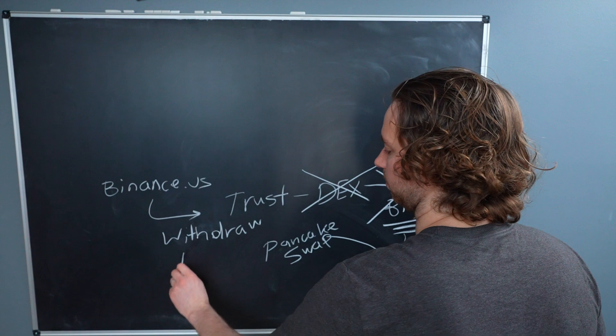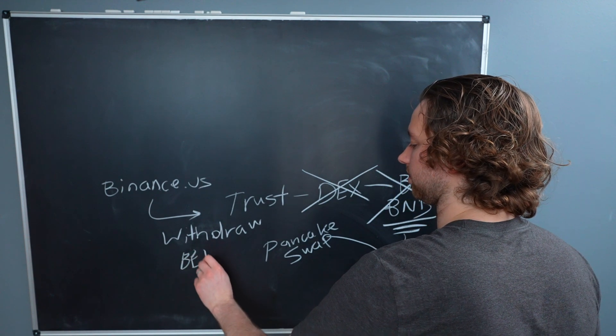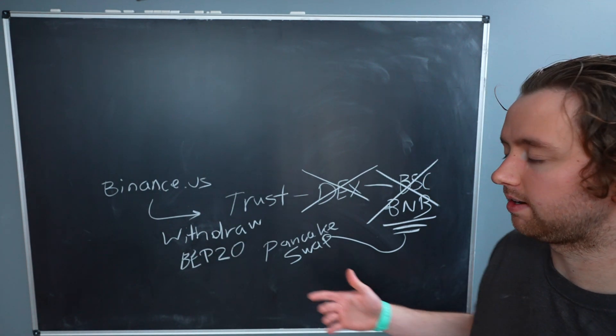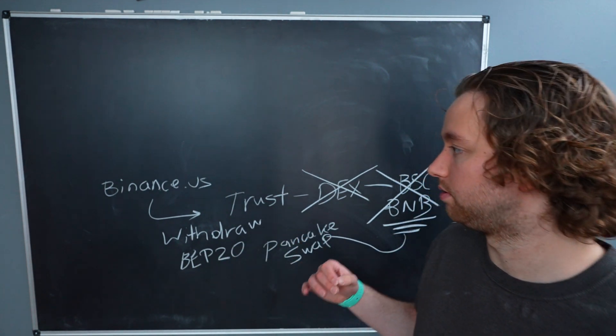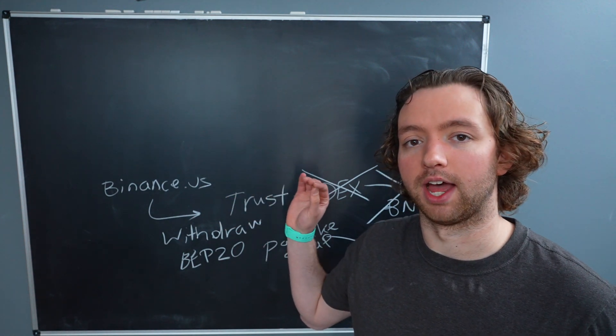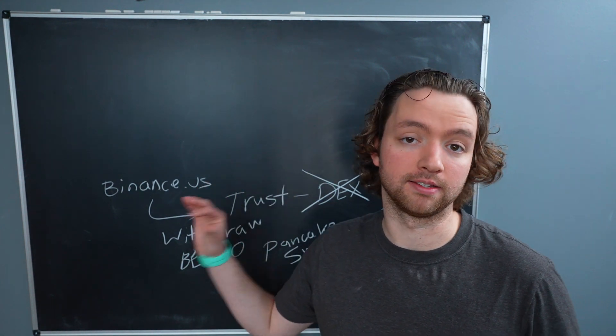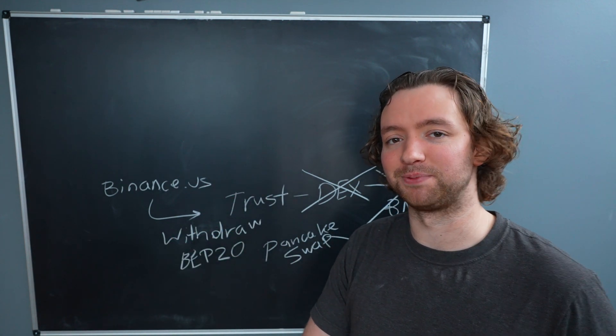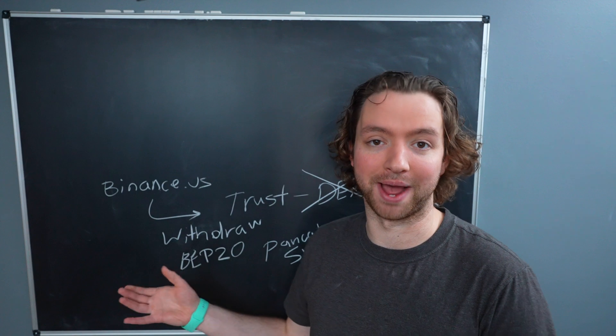So that's what we want. So we want it to give us the option to withdraw BEP20. Not quite there yet, but I could see that happening really soon because there was announcements that that is how it works on Binance.com. And Binance.us kind of follows Binance.com just a little bit slower. So I think that'll happen soon.